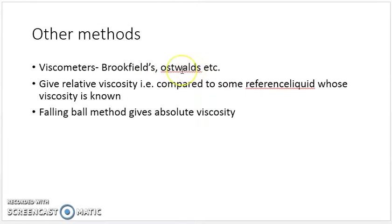Oswald's viscometer is the most common viscometer available, in which we compare some reference liquid with our test sample and relate the viscosities by a standard formula. Since the reference liquid has known viscosity, we can easily calculate the viscosity of an unknown sample.